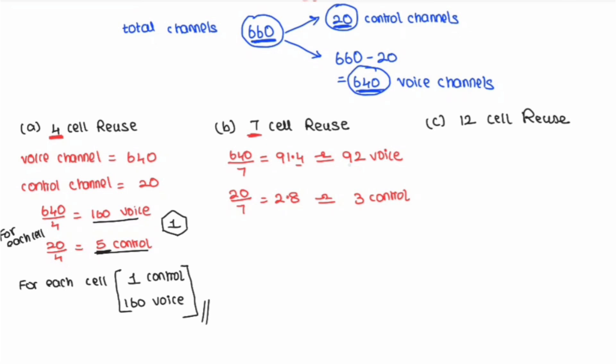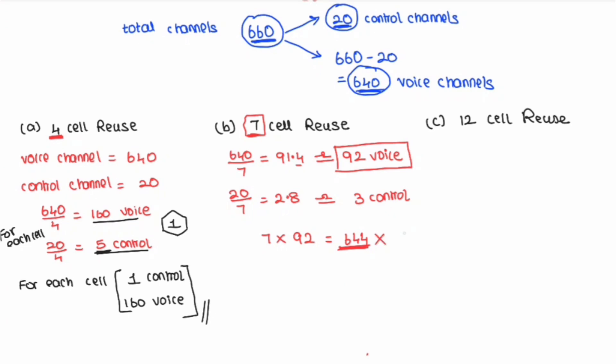However, there is a problem with the 7-cell reuse approximation. If we assign 92 voice channels to each of the 7 cells, that gives 7 × 92 = 644 total voice channels. But we only have 640 available — this exceeds the limit. So this distribution doesn't work and we need to try a different allocation using a trial and error or shortcut method.